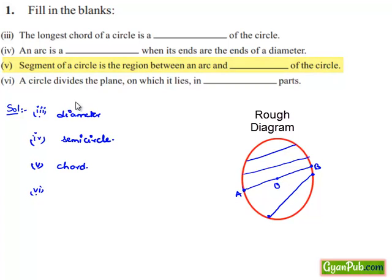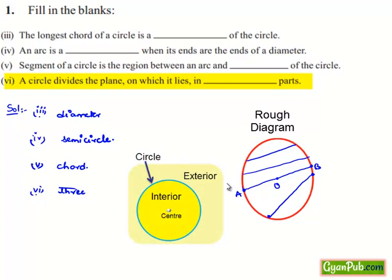Now moving on to the 6th blank. A circle divides the plane on which it lies into blank parts. Because if we consider a circle, the points on the plane are of three types. That is,